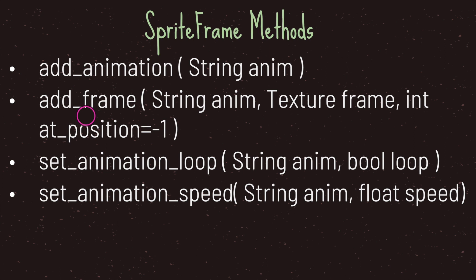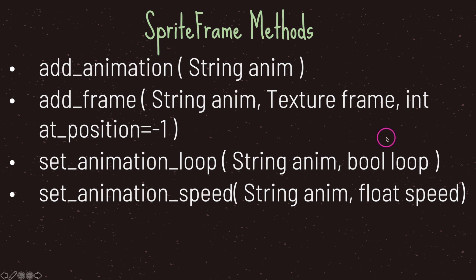It's good to leave the position at its default value. The third method is set_animation_loop. You may want your animation to continuously loop, so you use set_animation_loop with the animation name as the first argument. The second argument is a Boolean: true means the animation loops, false means it runs once.